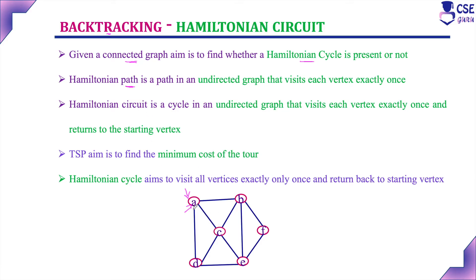A Hamiltonian path is a path that visits each vertex exactly only once. In a Hamiltonian path, it is not necessary to return back to the starting vertex. But if it is a Hamiltonian circuit or cycle, after visiting all other vertices in the given graph exactly only once, you need to return back to the starting vertex. That is the difference between a Hamiltonian path and a Hamiltonian circuit.